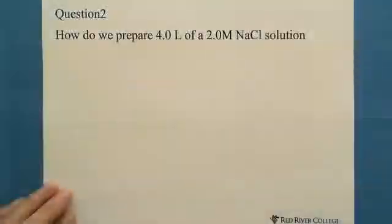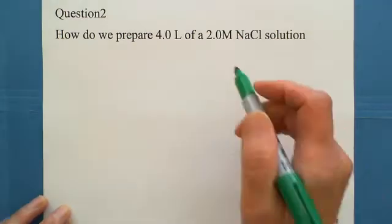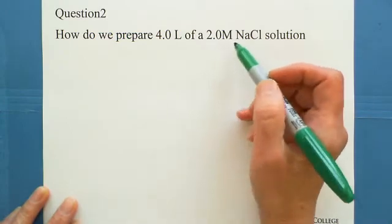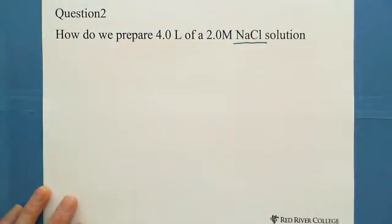Let's look at the second question. How do we prepare 4.0 liters of 2 molarity sodium chloride solution? How many grams you need to make 2 molarity and 4 liter solution? From the molarity formula, first you can find the number of moles. To make 2 molarity and 4 liters, how many moles of sodium chloride we need. We plug these two numbers into the formula.